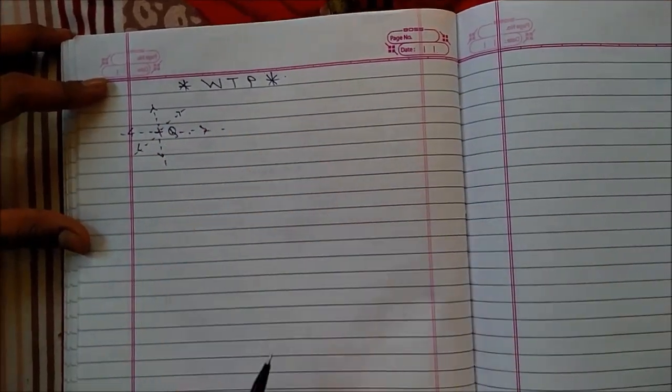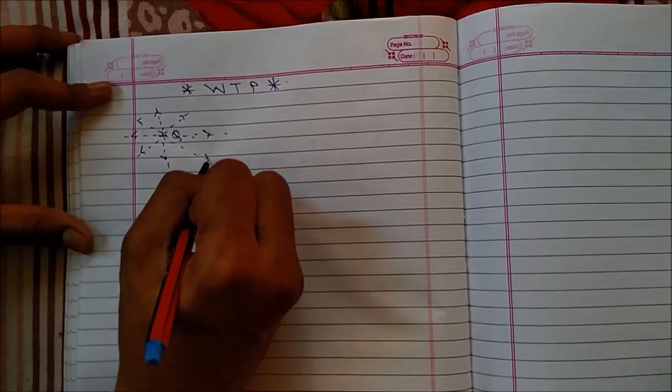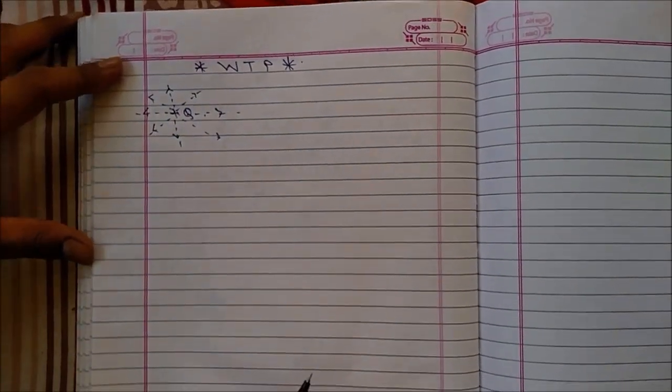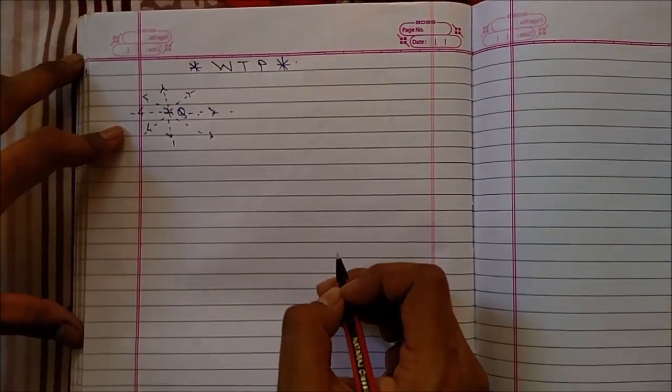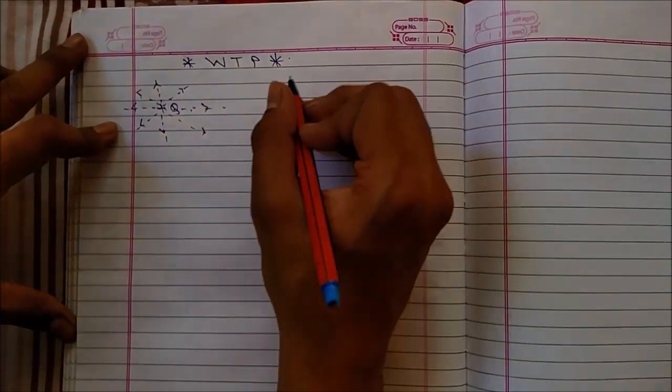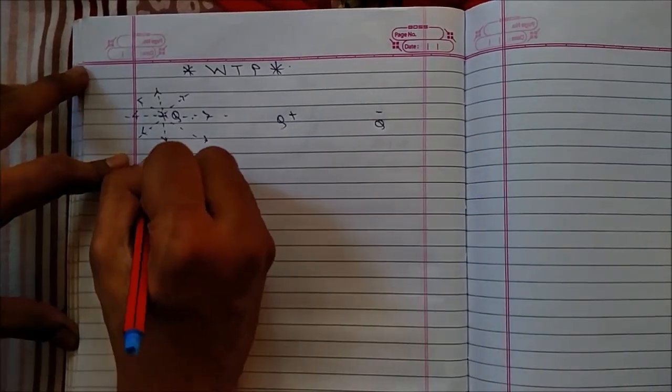These imaginary lines of force are nothing but electric flux density. This is a monopole.